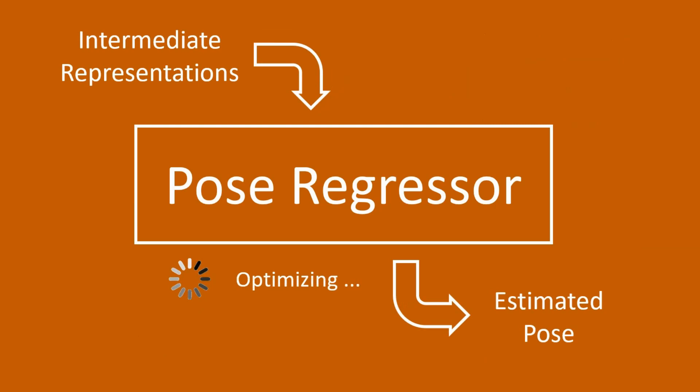The pose regressor receives predicted intermediate representations as input and formulates pose estimation as an optimization problem. It estimates the rigid pose parameters that best align 2D and 3D intermediate representations.